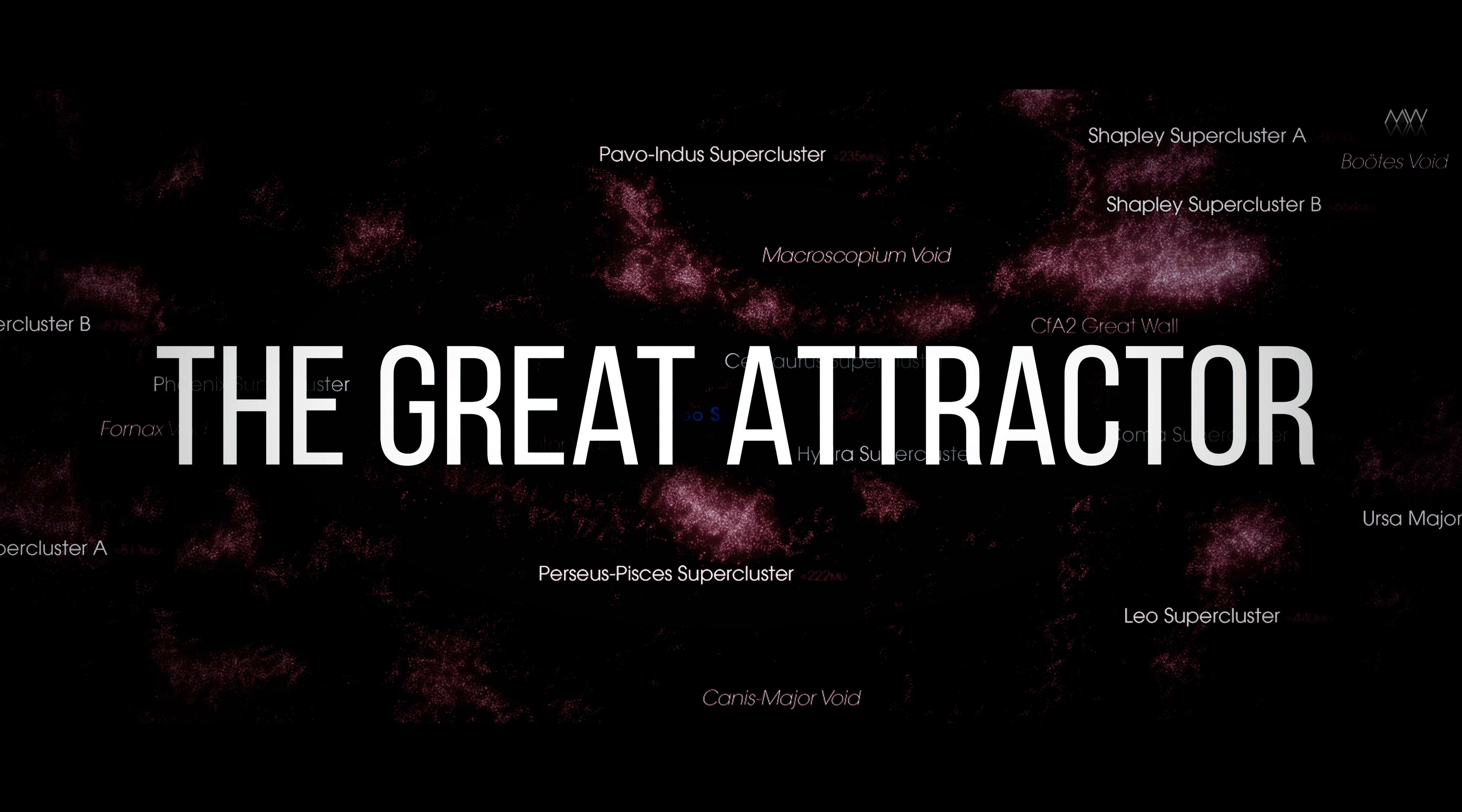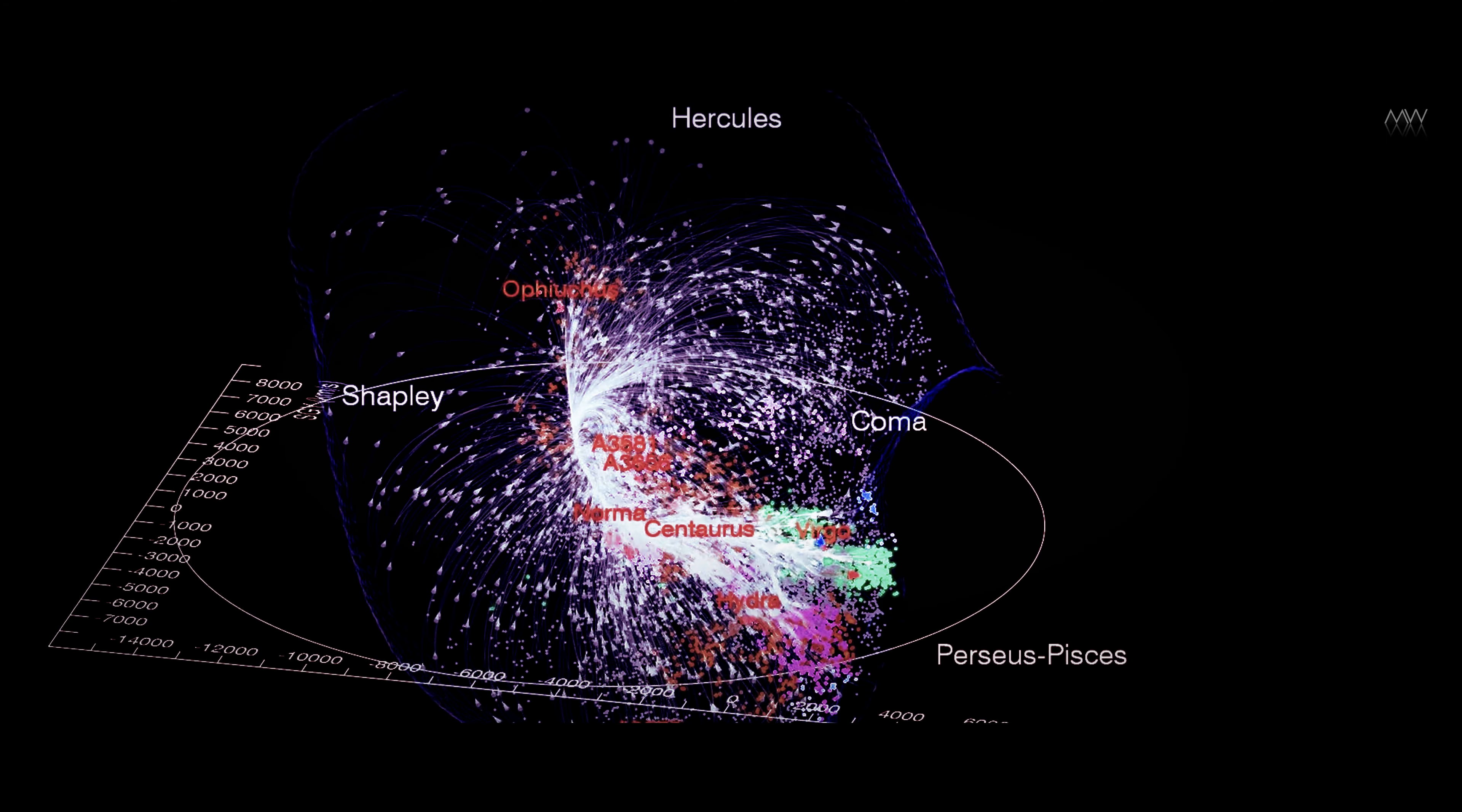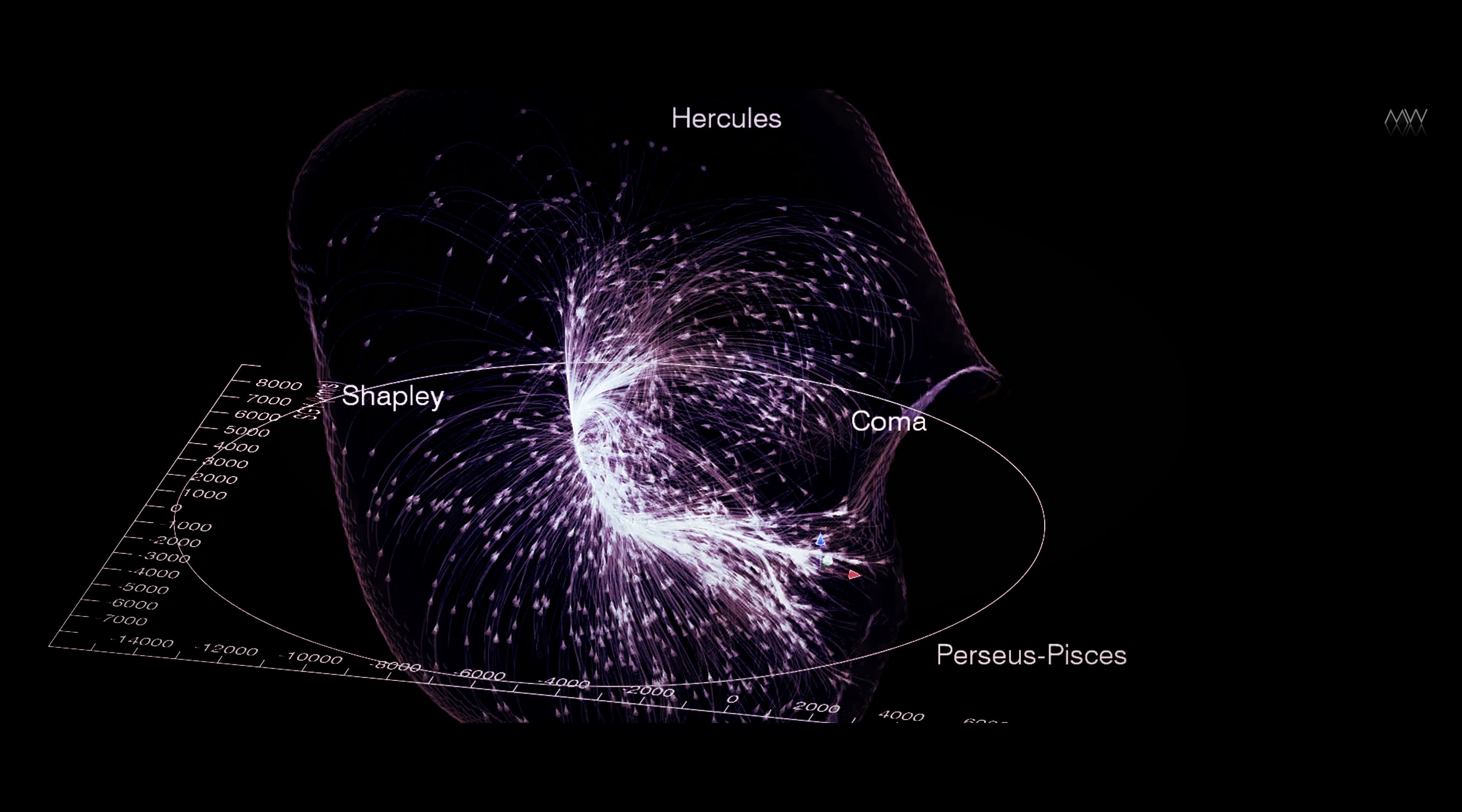The Great Attractor. The Great Attractor stands out as the most significant concentration of mass over a vast distance. Despite our galaxy being situated between 150 to 250 million light-years away, we, along with all neighboring galaxies, are currently moving toward the Great Attractor, estimated to have a mass of approximately 1,000 trillion suns,